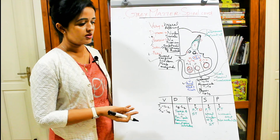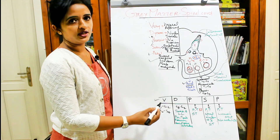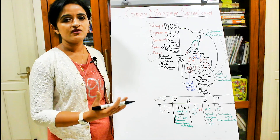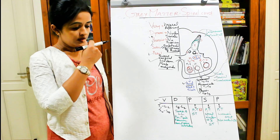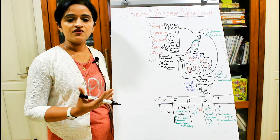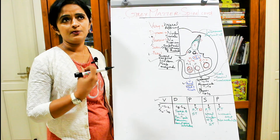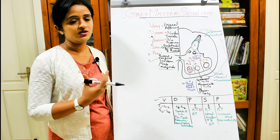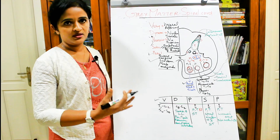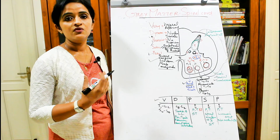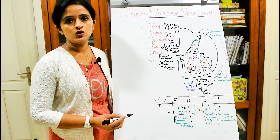Now let's see the functions of each nucleus. The visceral afferent nucleus carries afferent impulses from the viscera — the organs, blood vessels, and glands. The visceral information — pain in the form of stretch, contraction and relaxation of organs, pain, and temperature — all these sensations will be carried by the visceral afferent impulses reaching the visceral afferent nucleus.